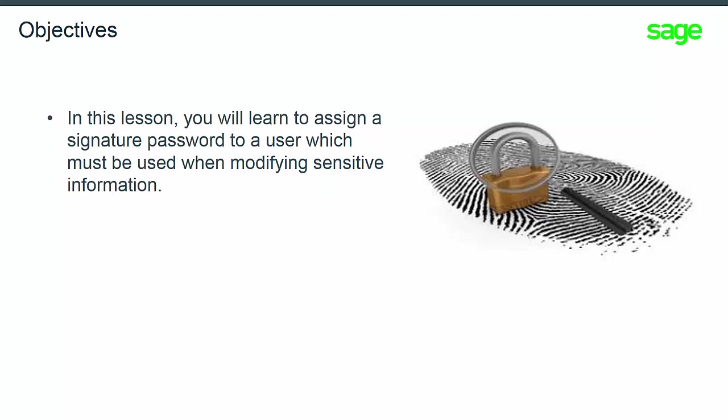In this topic, you'll learn to assign a signature password to a user, which must be used when modifying sensitive information. Some companies with a lot of sensitive information can use this new feature to prevent prying eyes or unauthorized user access. In this lesson, you will learn how to set up the user code so that a signature password can be associated with it.